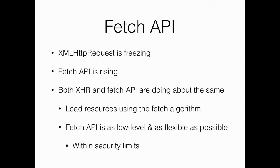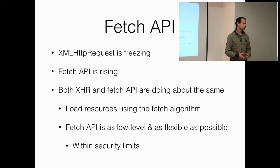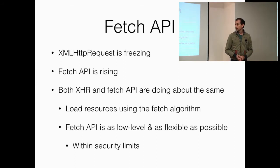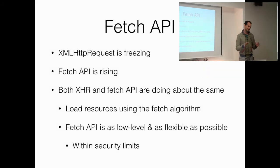They're about the same — it's the same algorithm behind it: how to load resources, how to do redirections and so on. So the API is similar, but the goal is also a bit different because XHR was quite a high-level API. You do not have a lot of control over all parameters. For instance, you were forced to use CORS when doing cross-origin calls. Fetch API is as low-level as possible so that you can do about anything that is still secure.